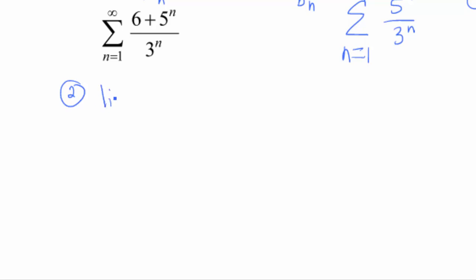Okay, so let's take a look at that. So let's look at the limit as n goes to infinity. So I'm gonna go ahead and stick my a sub n in the numerator. So 6 plus 5 to the n over 3 to the n, and then I'm gonna divide that whole thing by 5 to the n over 3 to the n. So this is just one big mess.